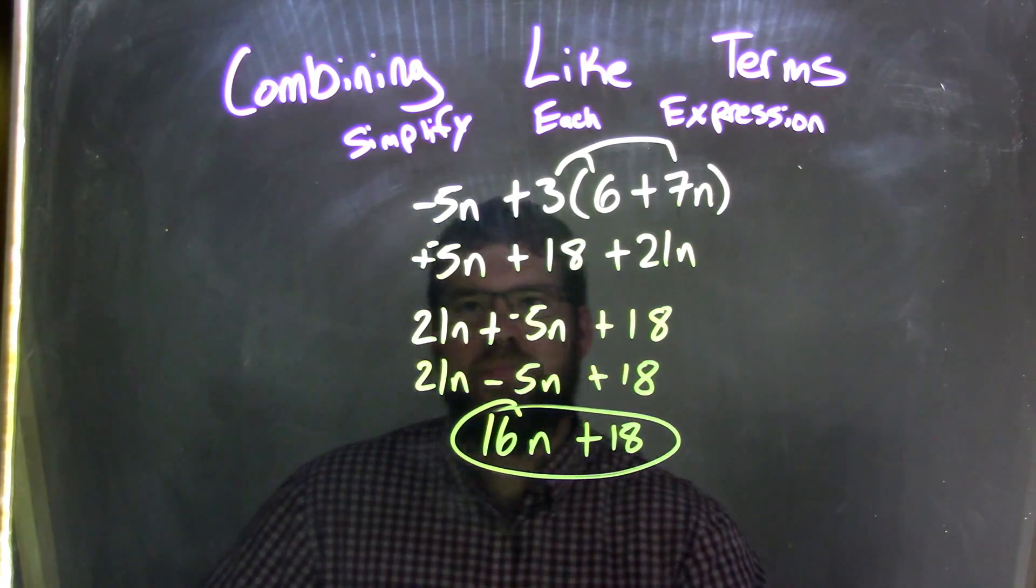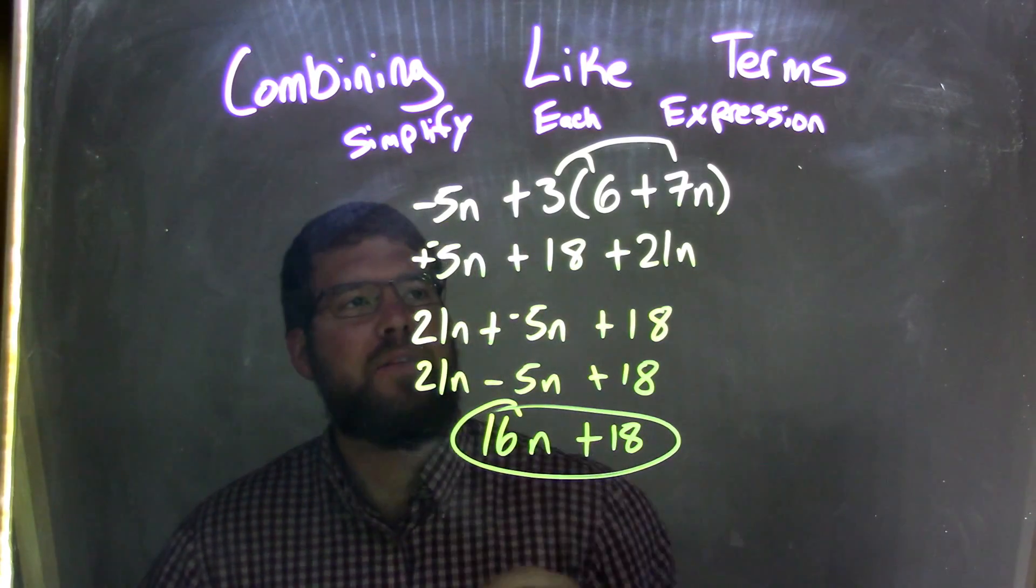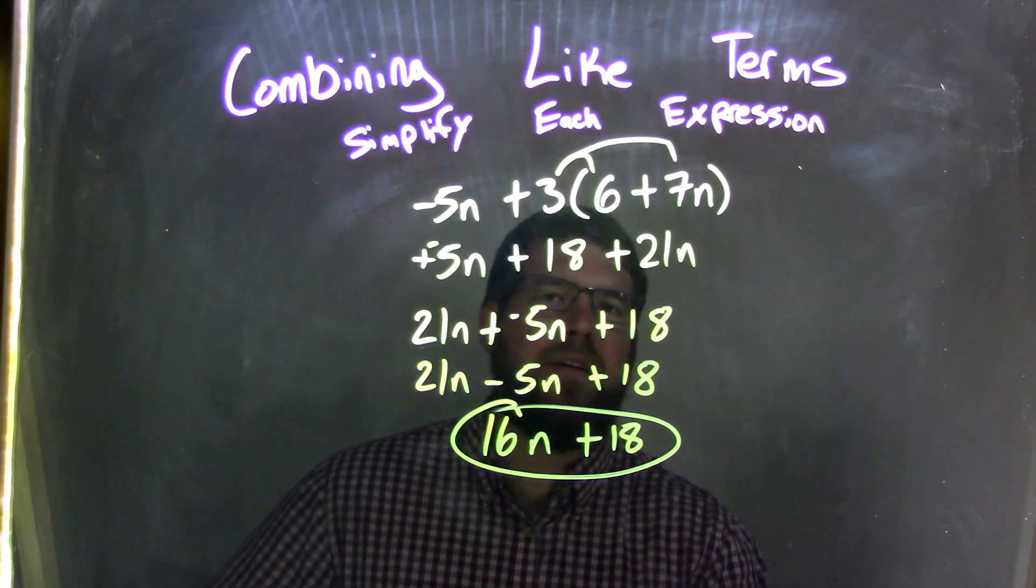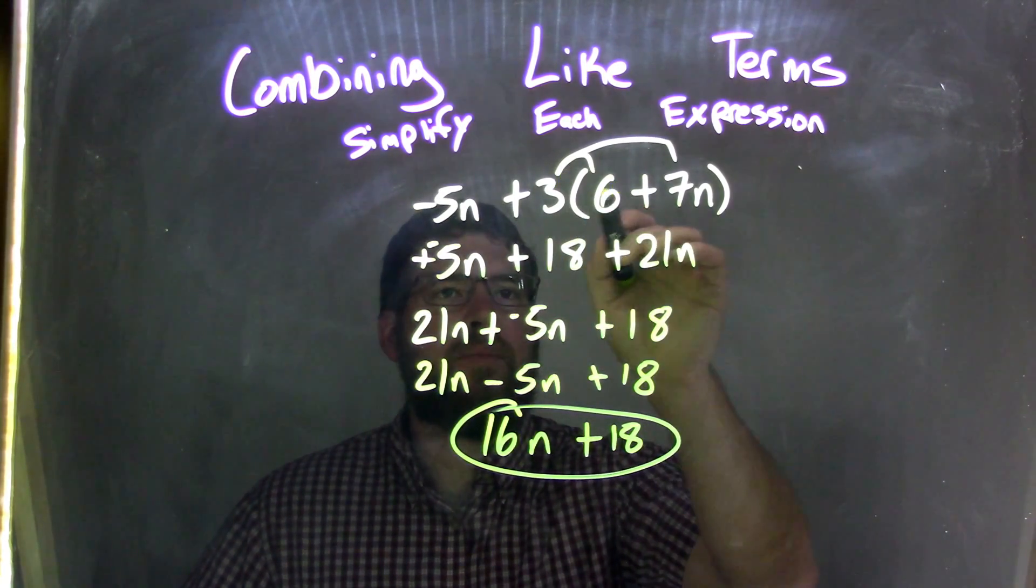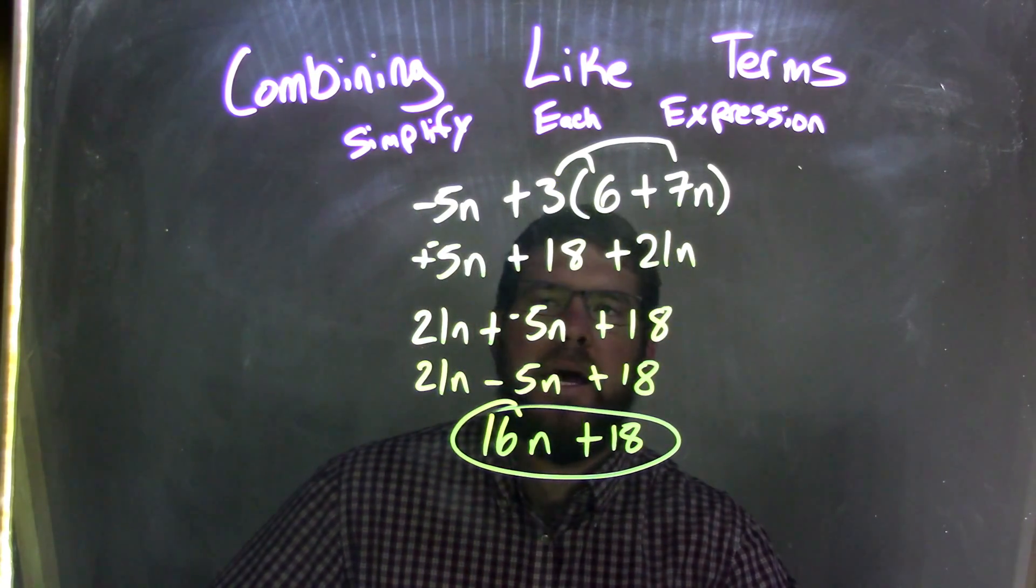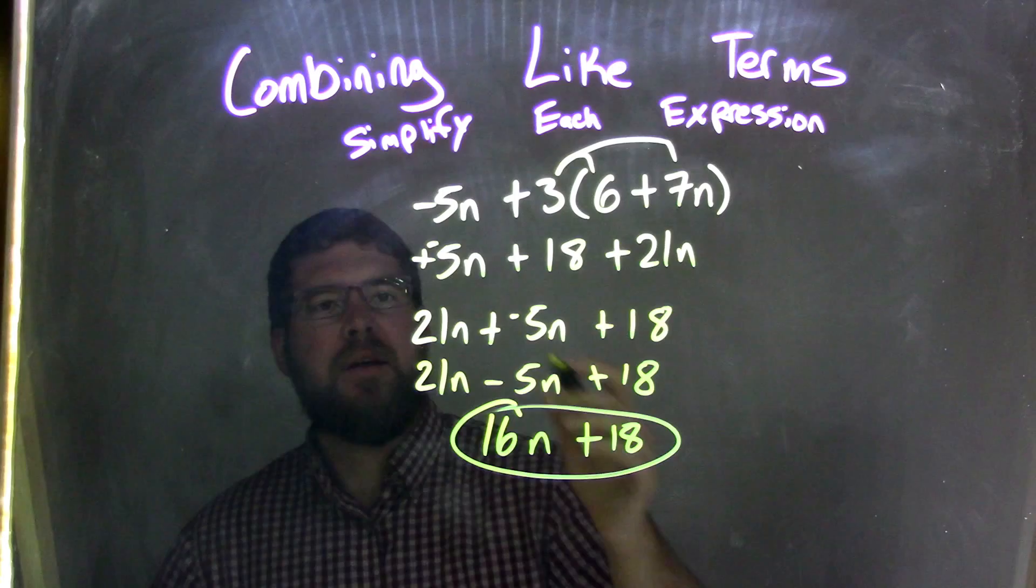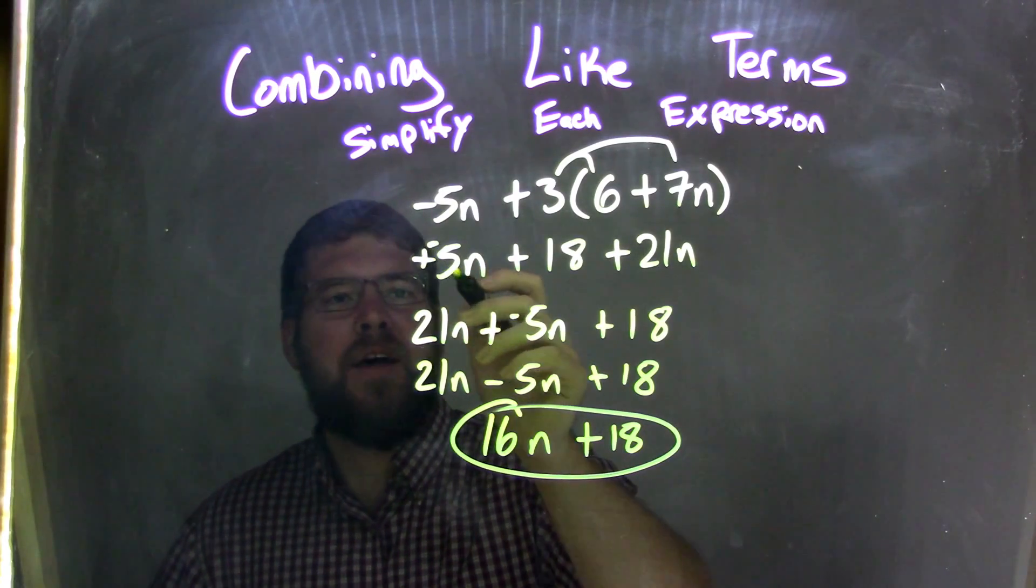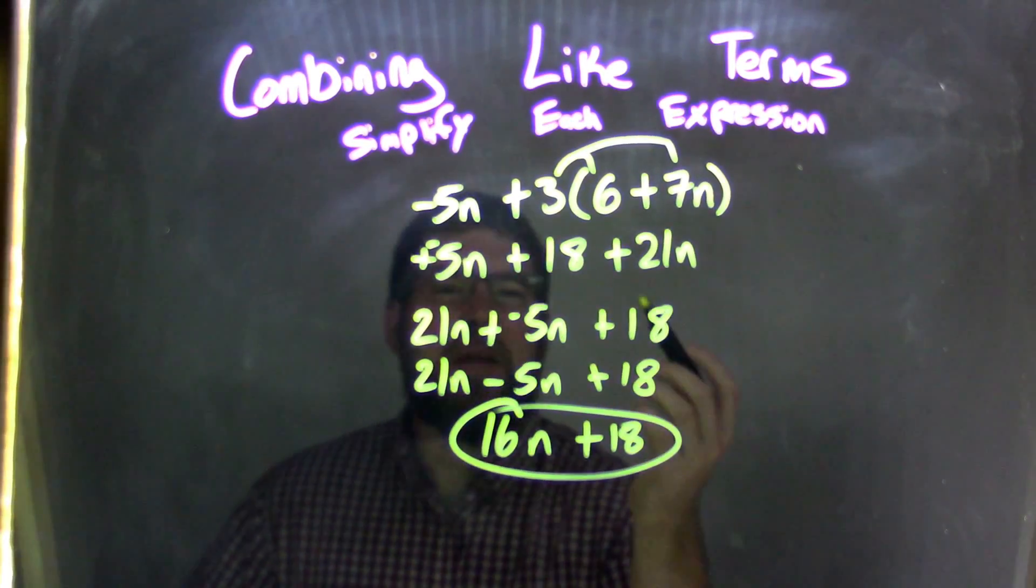So let's recap. We started with the negative 5n plus 3 times 6 plus 7n. I had to distribute the 3 to both parts, so 3 times 6 is 18, and 3 times 7n is 21n. Now I rearranged and I combined my terms. I made that minus 5n to be plus a negative 5n. It makes it a little easier to see.